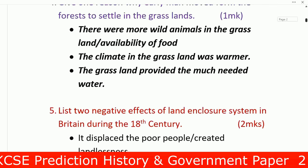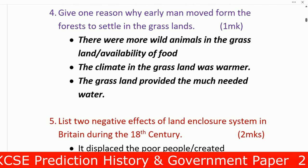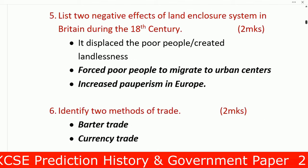Question 4: Give one reason why early man moved from the forest to settle in the grasslands. Number one: there were more wild animals in the grassland available for food. Number two: the climate in the grassland was warmer. Number three: the grassland provided much-needed water. Question 5: List two negative effects of the land enclosure system in Britain during the 18th century.